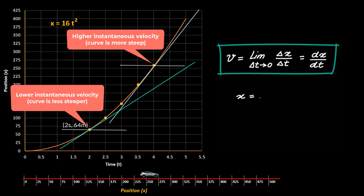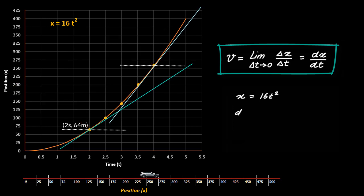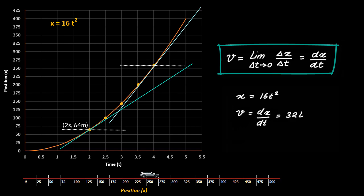For the equation x = 16t squared, we find the first derivative as dx upon dt = 32t, which is the expression for finding instantaneous velocity at any time t for the car. So v = dx/dt = 32t, where v means instantaneous velocity. If you ask what is the instantaneous velocity at t = 10 seconds, we calculate v = 32 × 10 = 320 meters per second.